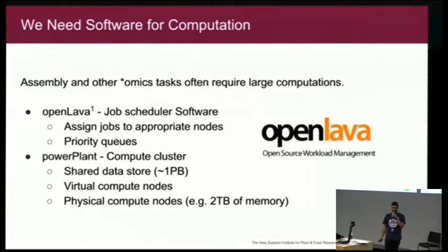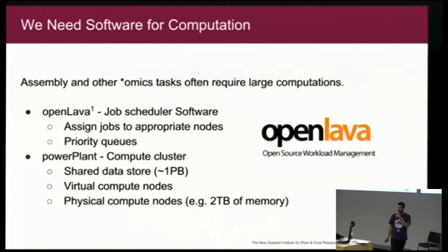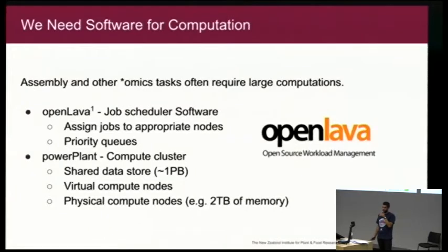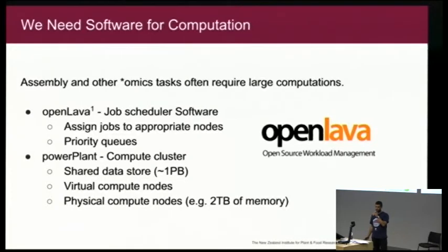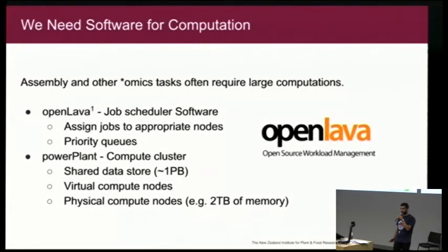We need compute power. We have OpenLava, an open-source job scheduler, which we use to assign jobs to appropriate nodes and priority queues — this allows us to utilise our cluster in the most efficient way. We also have PowerPlant, developed in-house with most of the credit going to Eric, our systems administrator. This is our compute cluster — a shared data store of around one petabyte, with virtual and physical compute nodes, some of which have up to two terabytes of memory available for algorithms that require a lot of data in memory to run efficiently.